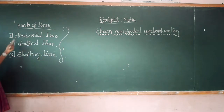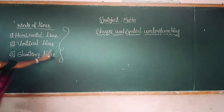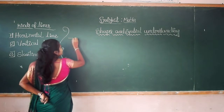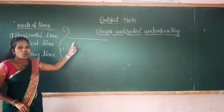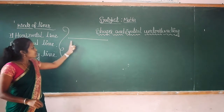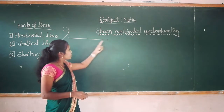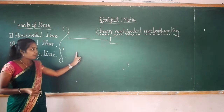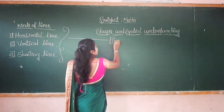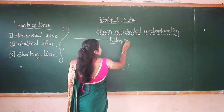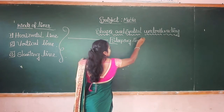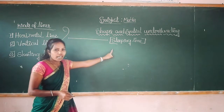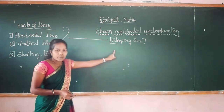Let's see more about these lines — horizontal line, vertical line, and slanting line. Now, the horizontal line: what is the position of this line? The position of this line is sleeping. That's why, instead of horizontal line, we also call it the sleeping line.